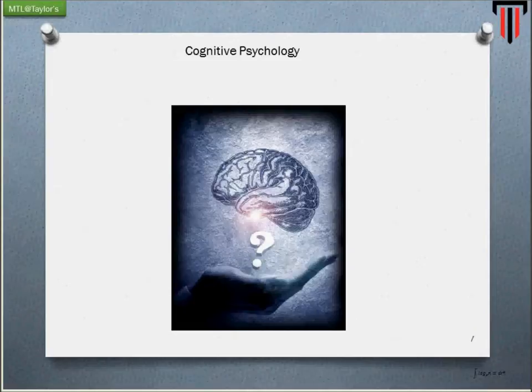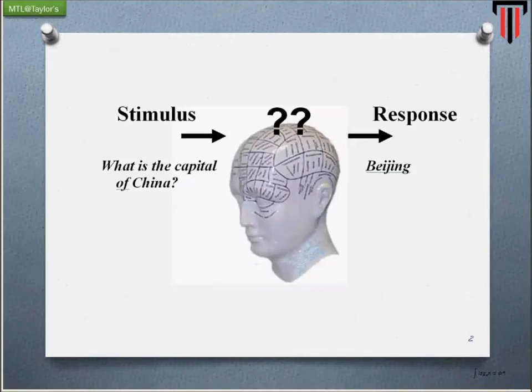During the 50s, there was a realization that behaviorism did not fully explain human learning. Although behaviorism emphasized learning that was observable and measurable, there was something missing — namely the mental events. In other words, what is going on in the mind of the learner when he or she is learning? It was not purely looking at stimulus and how we respond to it. They wanted to know how we learned, and particularly how we learn language.